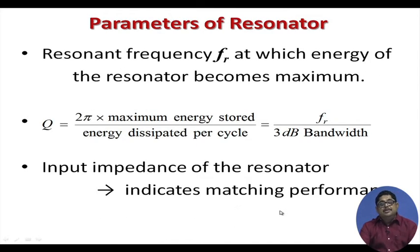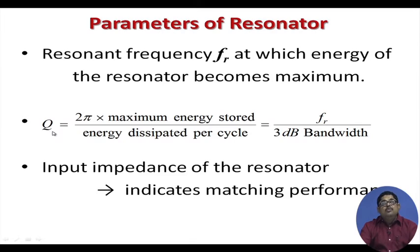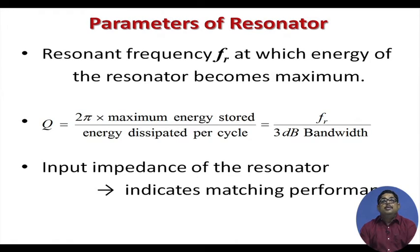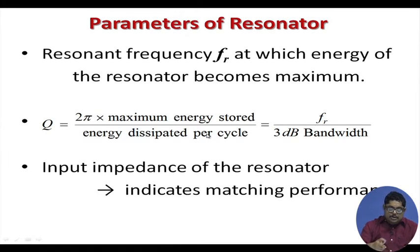What are the parameters of a resonant circuit or resonator? Obviously, the resonant frequency f_r at which energy of the resonator becomes maximum. There is also the Q of a resonator: Q is defined as the maximum energy stored divided by the energy dissipated per cycle, multiplied by 2π. We normally require that in a resonator energy stored is high and energy dissipated is very low, so we demand a very high Q.